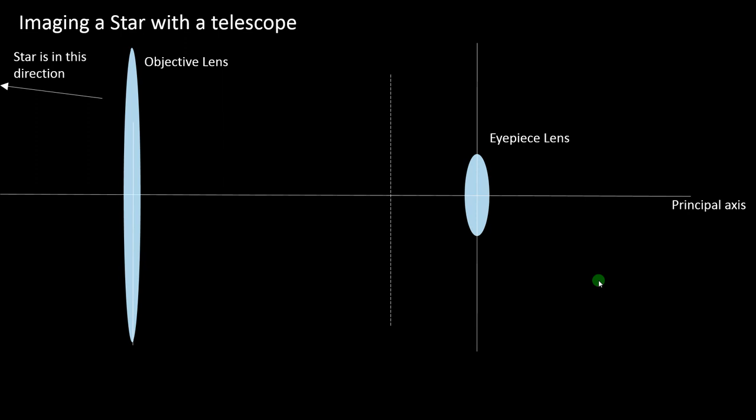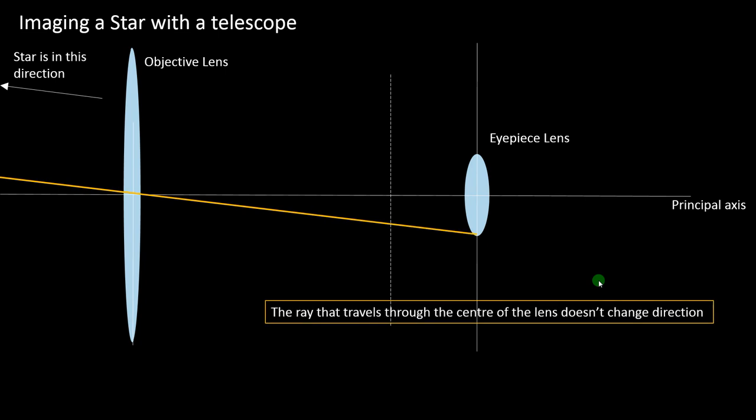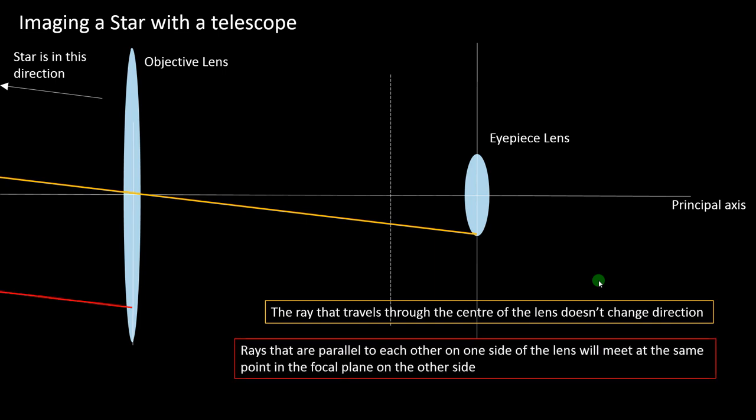Here's how it does it, using the laws of ray diagrams for lenses. We start with the ray through the centre of the objective lens, coming from the direction of the star, which goes straight through without changing direction. Then we draw a second ray parallel to the first, so we can use the rule that parallel light on one side of the lens goes through the same point in the focal plane on the other side.